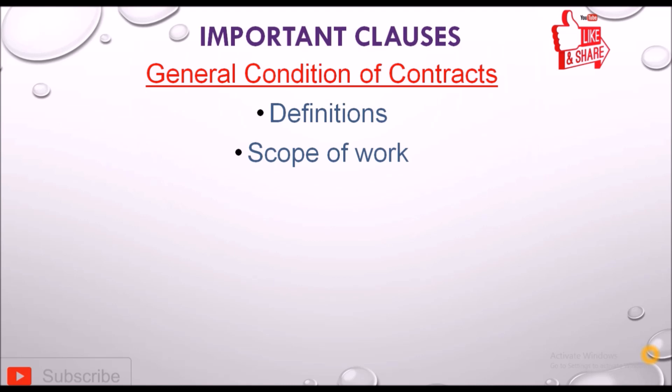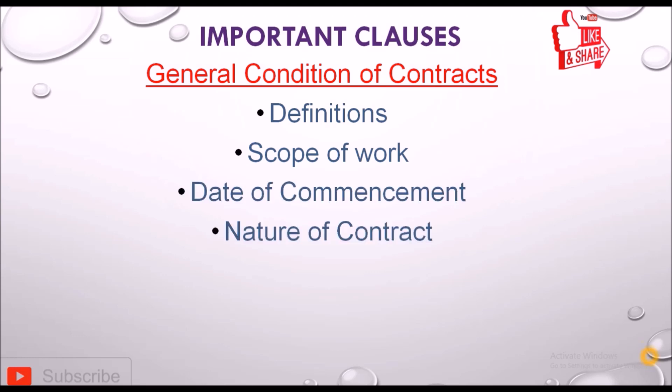In the definition clause, we define what is engineer, architect, contractor, client, owner, virtual completion, working time, and other terms used in the contract. The second clause is the scope of work, which includes the date of commencement — meaning the date on which the work will start by the contractor, which is essentially the starting date of the project.